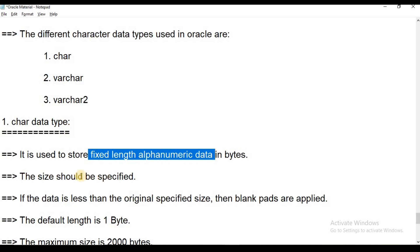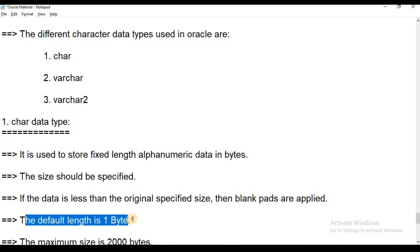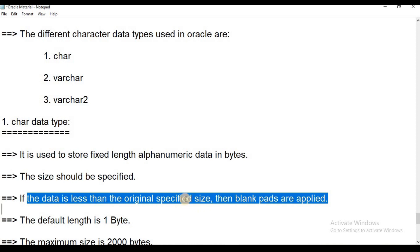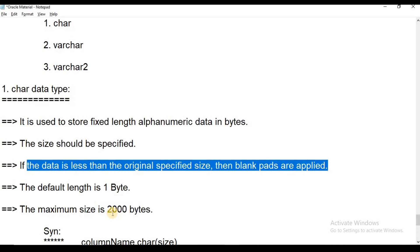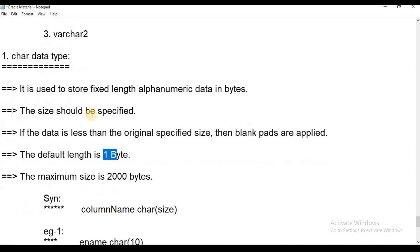The size should be specified whenever we are going to create a column in a table. We will mention the size, and the maximum size is 2000 bytes. If you do not specify the number of characters, the default is 1 character. If you do not specify the size, the remaining spaces are used to add blank pads. The maximum size is 2000 bytes. The default size is 1 byte.